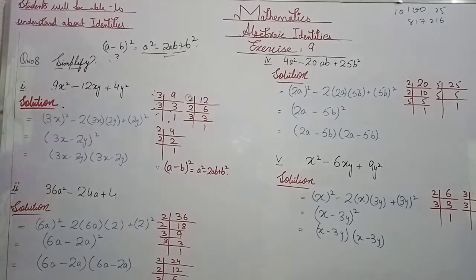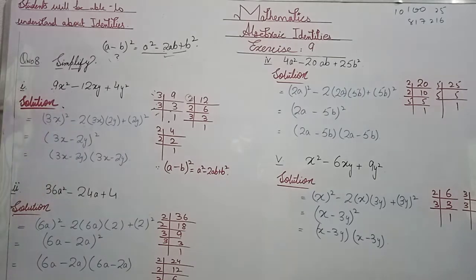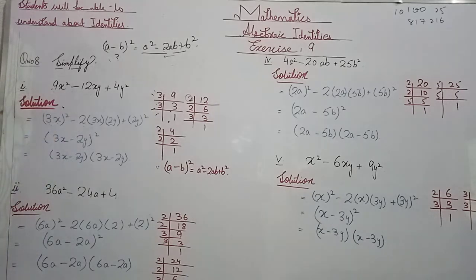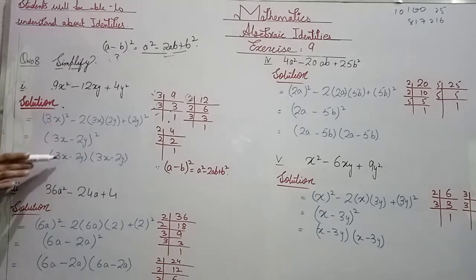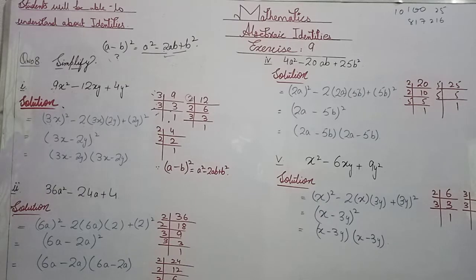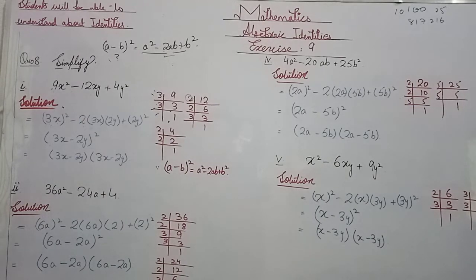In (3x minus 2y)², the base is 3x minus 2y and the exponent is 2, which means the base is written two times. So (3x minus 2y)² equals (3x minus 2y) into (3x minus 2y). Similarly, the next question is 36a² minus 24a plus 4.